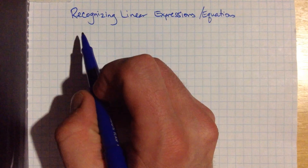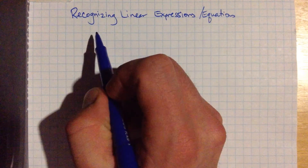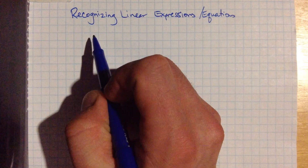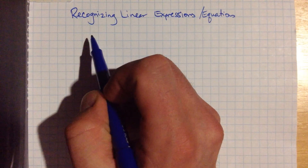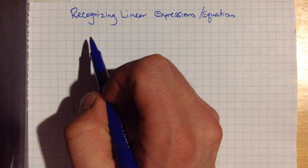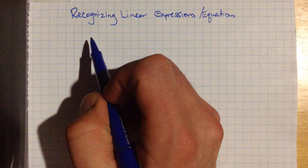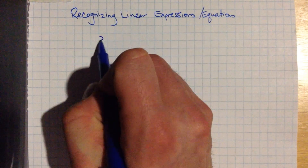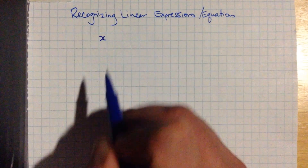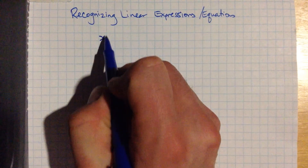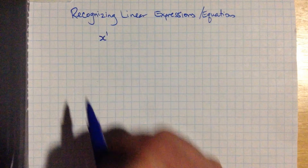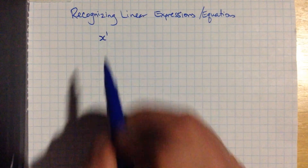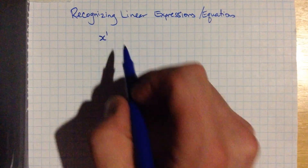Linear equations or expressions always have a variable, or maybe more than one variable, but they all have degree one, which means they have the variable and the exponent on that variable is a one, and we usually don't even write the exponent down.